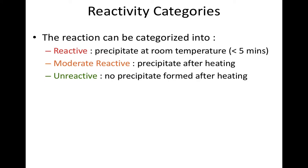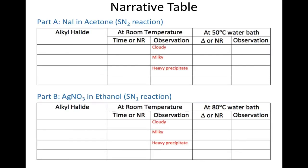Depending on the time and temperature needed for the reaction, we can categorize the reactivity of the alkyl halide into 3 categories. It is reactive if a precipitate forms within a few minutes at room temperature. Moderately reactive is when the precipitate forms after the reaction is heated in the hot water bath. Unreactive is when no precipitate forms even after heating. During the reaction, we will observe the precipitate formed — the observation can be cloudy, milky, or heavy precipitate.